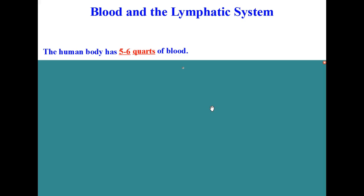The human body has five to six quarts of blood in it. That's almost a gallon and a half.